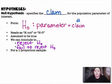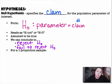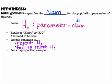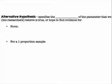We never, ever accept. So it's either we reject or we fail to reject. For a one-proportion sample, an example would be the null hypothesis P equals 0.45, just as an example of a value.